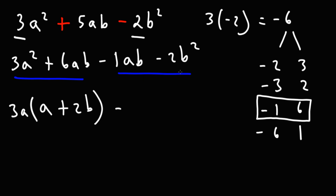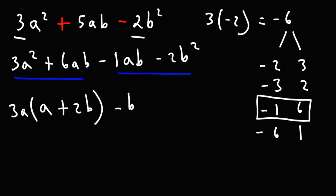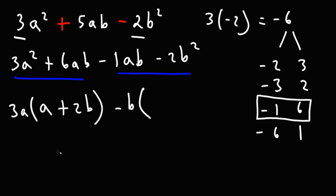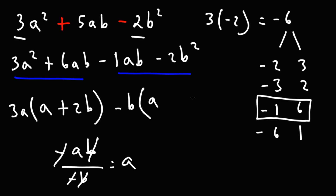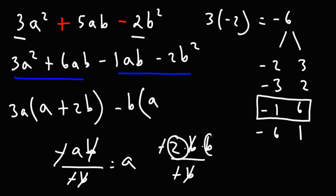In the next two terms, we take out the GCF as well. We can take out a b from both terms and also a negative sign since they both have it, so the GCF is negative b. Negative ab divided by negative b: the negative signs cancel and b cancels, leaving just a. Negative 2b squared divided by negative b: b squared is b times b; cancel the negative and one b, leaving 2b, so it becomes plus 2b.